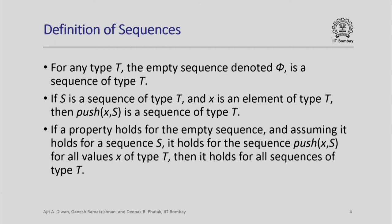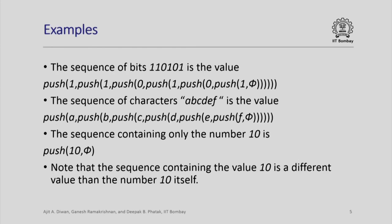Essentially this says that any sequence of type T is obtained by starting with the empty sequence and pushing elements of type T into the sequence. Like next, push is the only operation for generating sequences of type T. Let us look at a sequence of bits, say 110101. This is the value obtained by first pushing 1 into the empty sequence — start always with the empty sequence — then push a 0, then a 1, then a 0, then a 1, then a 1, and so on. This will generate the sequence of bits 110101.